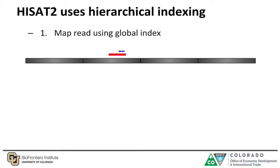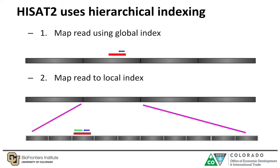So when you have a read, what HISAT2 does is initially use the global index to map the read to the genome. Then the second step is to map the read using the local index, and this in turn refines the location of where your read is mapping to.